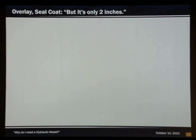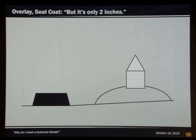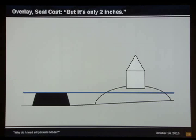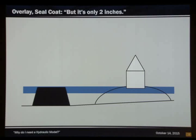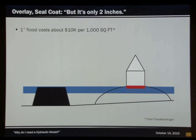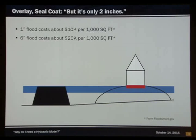Overlaying seal coat — but it's only two inches. In this specific case, we have a little house up the hill and a roadway. Through the years, TxDOT has come and added seal coat. Before, the water level would be right here — house is good, nothing happens. You add two inches of seal coat, and now the water is higher. Then you add another layer, and another one. Next thing you know, you've added enough seal coat to the road that the water elevation is actually hitting that house. According to FloodSmart.gov, it costs about $10,000 per 1,000 square feet of construction flooded with only one inch of water, and if it goes to six inches, that cost doubles.